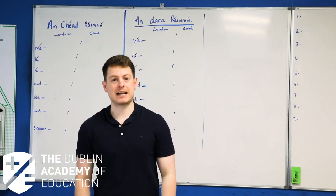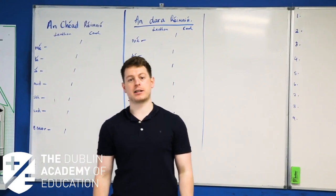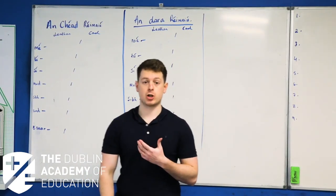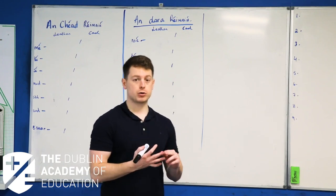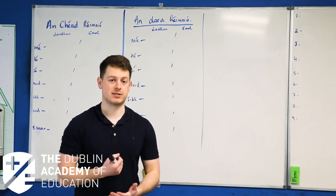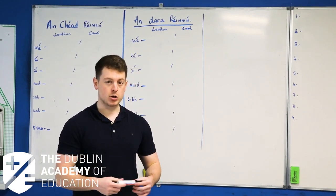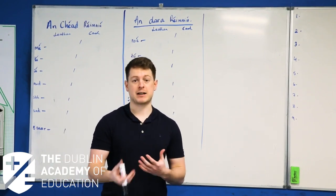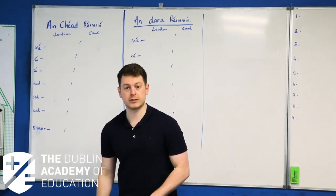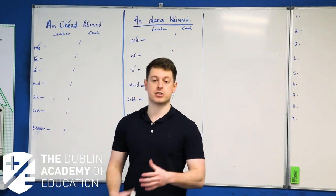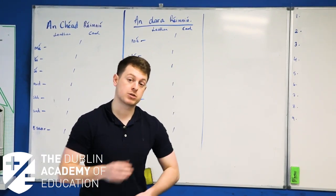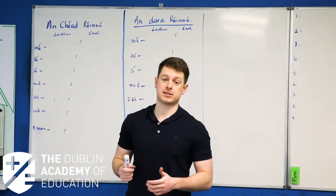Okay guys, we're at the last segment here today. What we're focusing on very simply is the Aimsir Láithreach. As you've seen for our poetry, for our prose, for our drama, a lot of it's going to be in the present tense. So the Aimsir Láithreach is the present tense. We have to get familiar with that. This is on page 113 of your notes, K3J. What we're going to focus on here is what do we do when we're talking about the present tense.